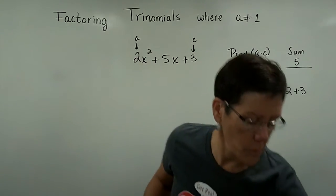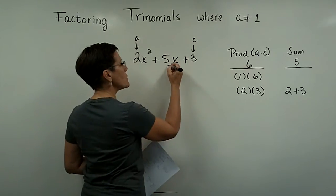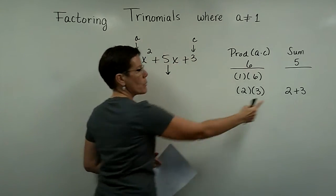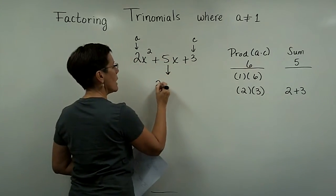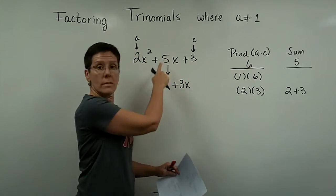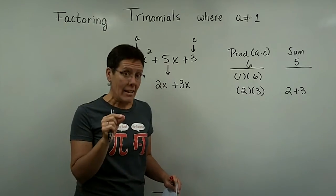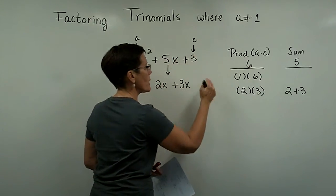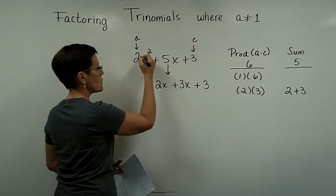What we're going to do is we're going to take the middle term of this trinomial and we're going to replace it with a 2x and a 3x. Now isn't 2x plus 3x equal to 5x? And so, we haven't changed the problem at all. We've just replaced this.